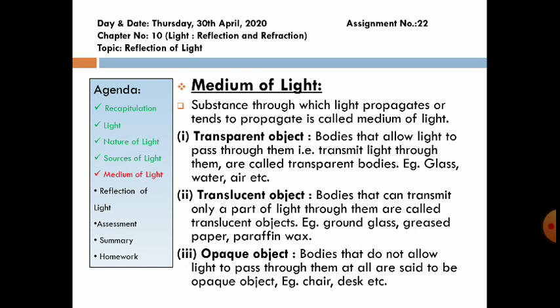Opaque objects. Bodies that do not allow light to pass through them are said to be opaque. Example: chair, desk, wall, etc.